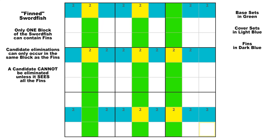But let's say this pattern is spoiled by one or two fins here in block 5. Remember, the fins must lie in the base sets and must be contained within only one block. Now if either of these fins is true, then the candidate 2s in R4C4 and in R4C6 have to be false. And if both of those fins are false, then those same two candidate 2s in the red cells must also be false because of the swordfish. So either way, those two candidate 2s in the red cells are false, and you can eliminate them with confidence.